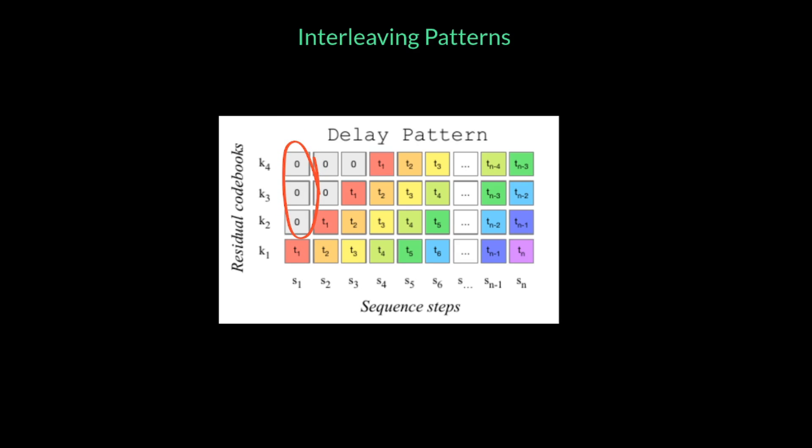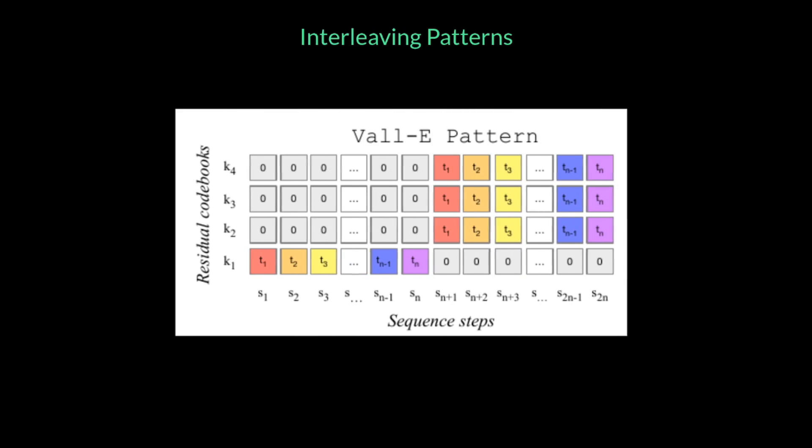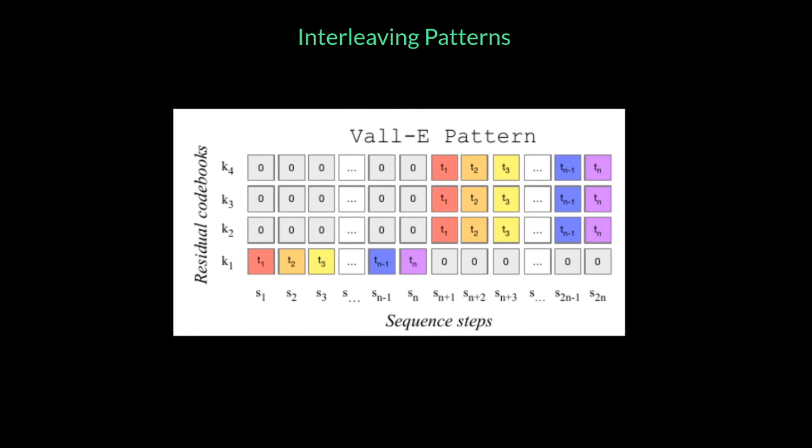Then there's a delayed pattern where we introduce one step delay per codebook to indicate the order of the codebook itself. Then there's a more promising pattern that has been adapted from Vali paper, which is that we prioritize the outputs of the first codebook for all the end time stamps. Then we switch to parallel pattern for rest of the codebooks. For this reason, this pattern takes twice the sequence steps compared to the other patterns.